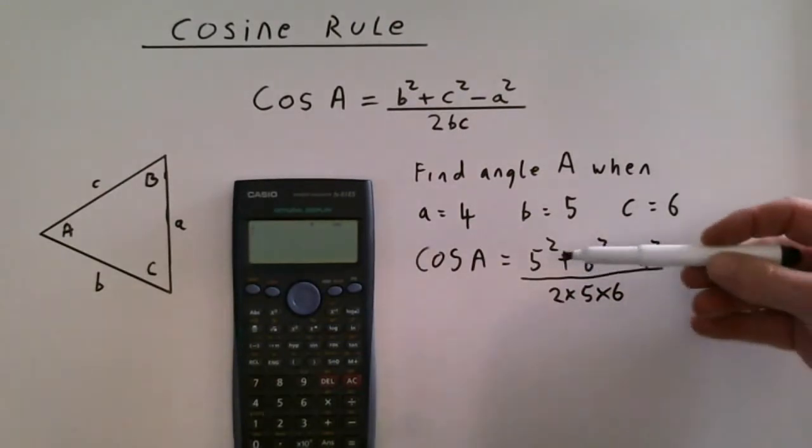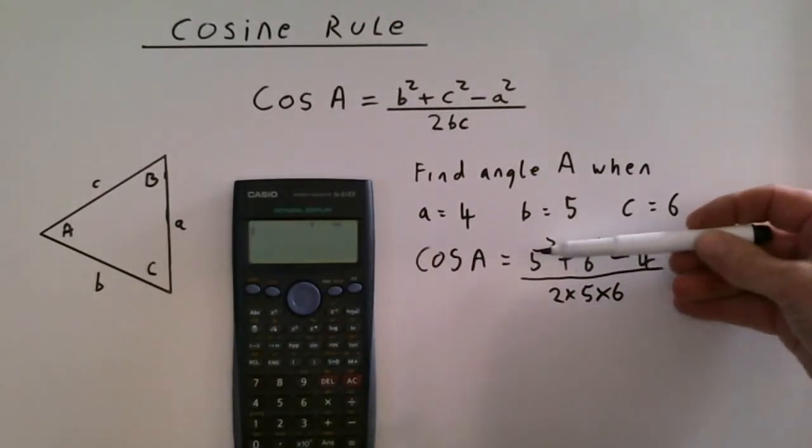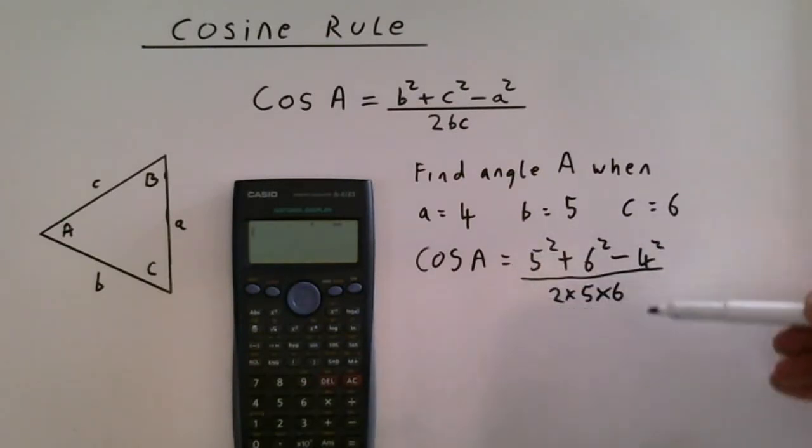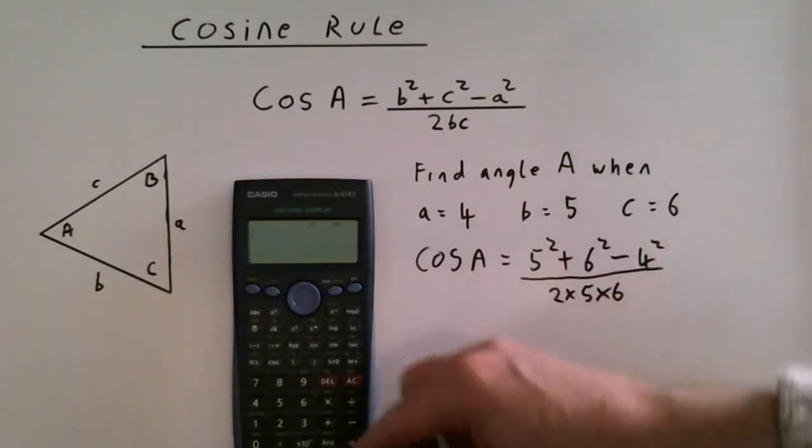I'm going to do it in the calculator. Now, because we're going to divide that lot by that lot, we need to put this in brackets when it goes into the calculator to force it to follow the rules of BIDMAS. So here we go.